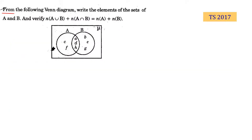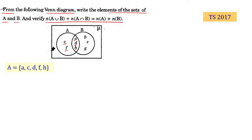From the following Venn diagram, write the elements of sets A and B, and verify the relationship. From the Venn diagram, set A contains elements A, C, D, F, and H.